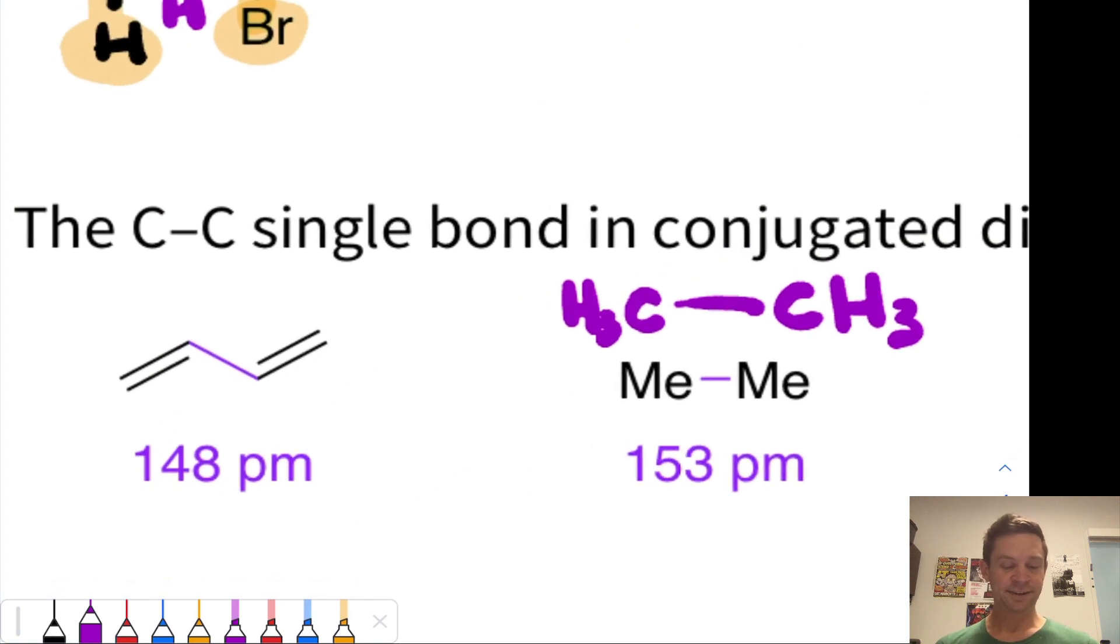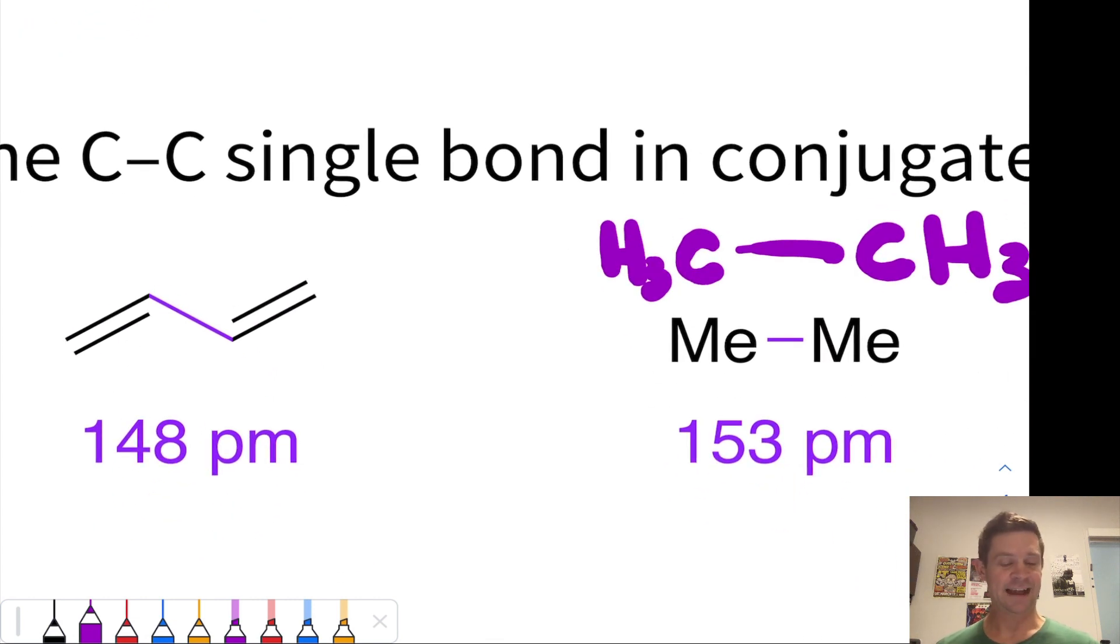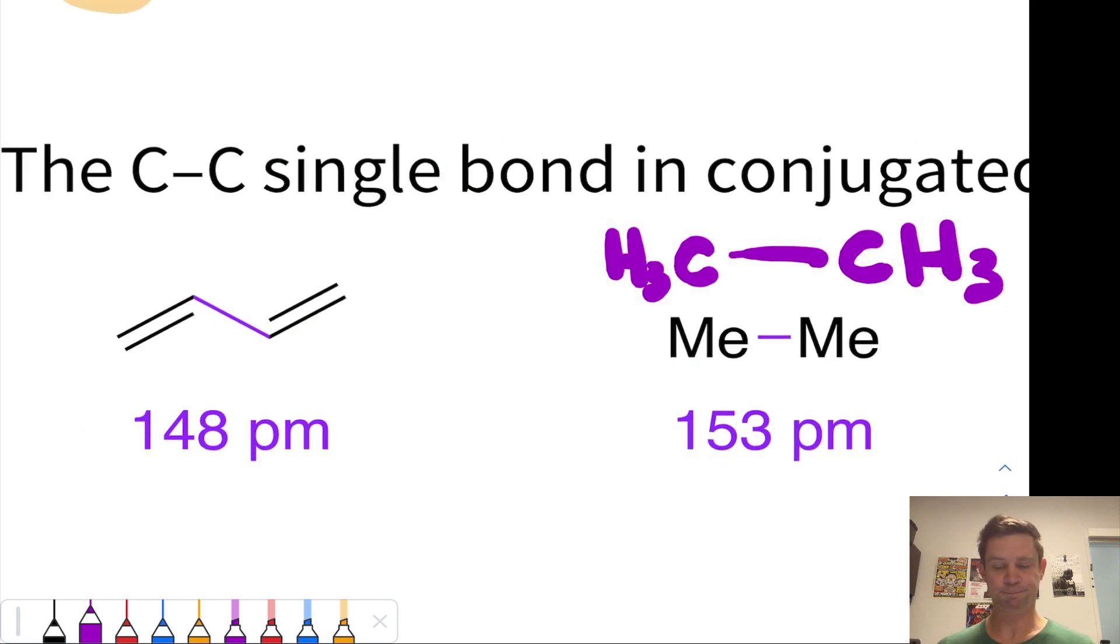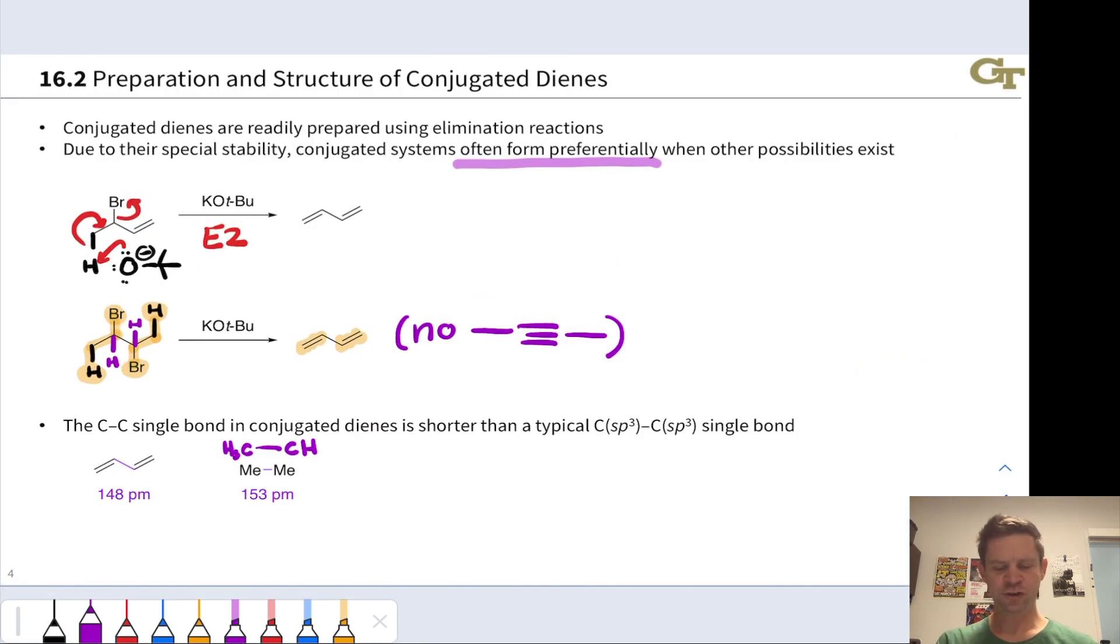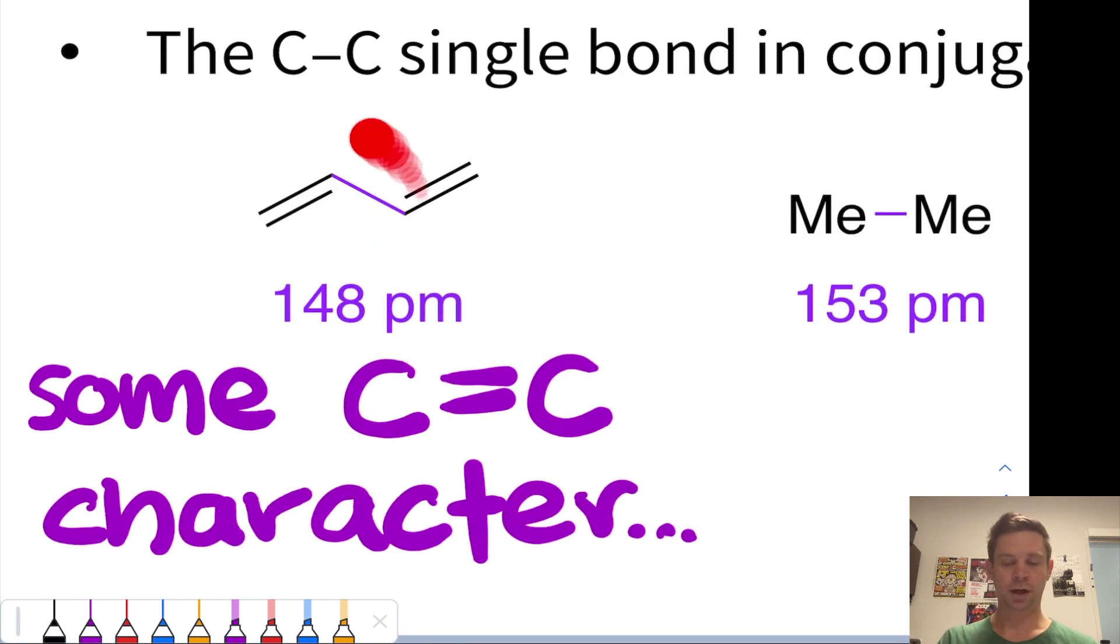And on the left here, we have 1,3-butadiene. And notice that the 1,3-butadiene is actually a little bit shorter. That central single bond between the two carbons highlighted in purple is a little bit shorter than the C-C bond in ethane. This suggests, and other experiments and other data bears this out, that there's some carbon-carbon double bond character in that apparent single bond between the inner carbons of 1,3-butadiene. We'll see why this is.